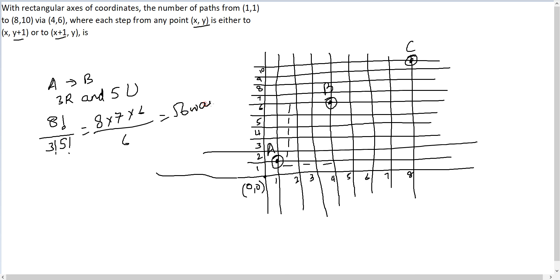Similarly, to move from B to C you need four rights and four ups, which can be rearranged in 8!/(4!×4!) = 8×7×6×5/24 = 70 ways.